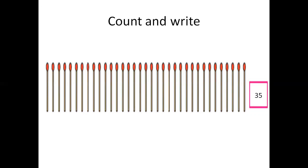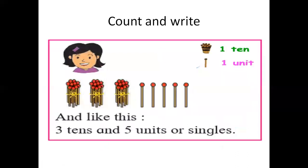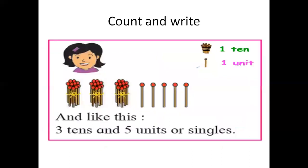Now we will count these matchsticks by another method. For that we will make a group of 10 matchsticks. This is the one group of 10 matchsticks. This is another group having 10 matchsticks. This is the third group. And 1, 2, 3, 4, 5 — 5 single matchsticks remained. So here are 3 groups of 10 matchsticks, that is 3 tens, and 5 single matchsticks remain.